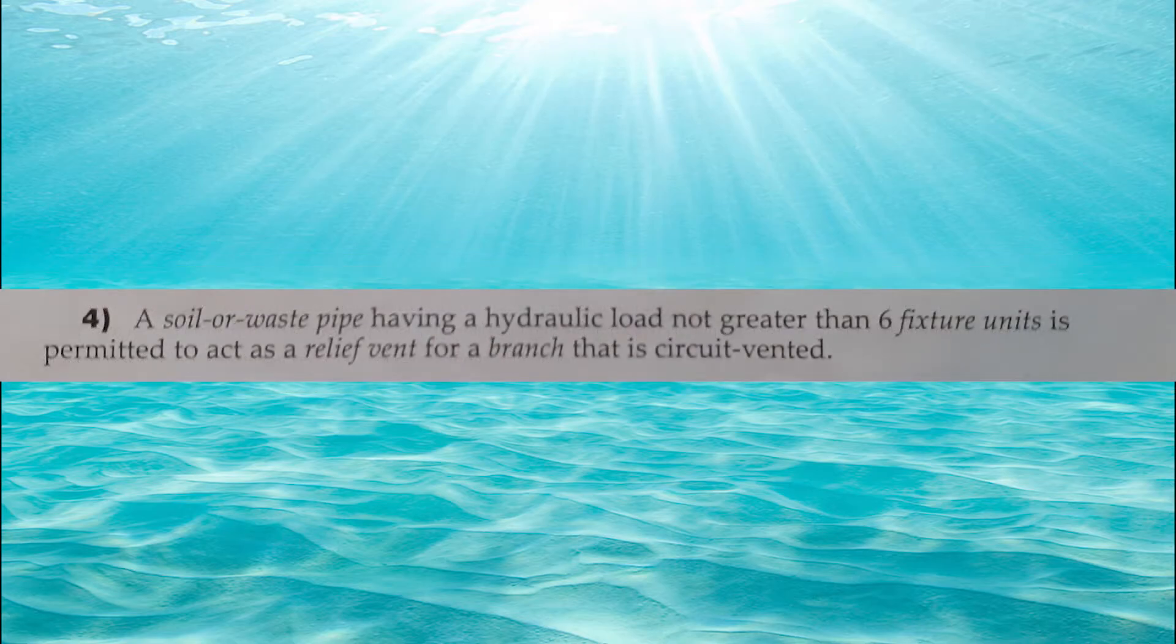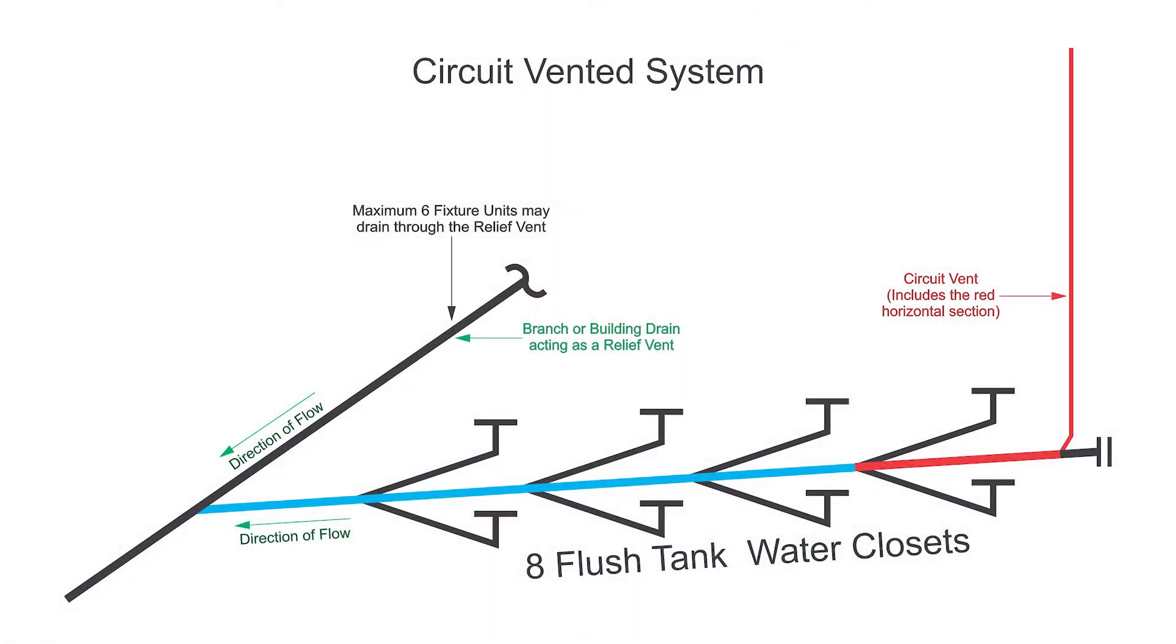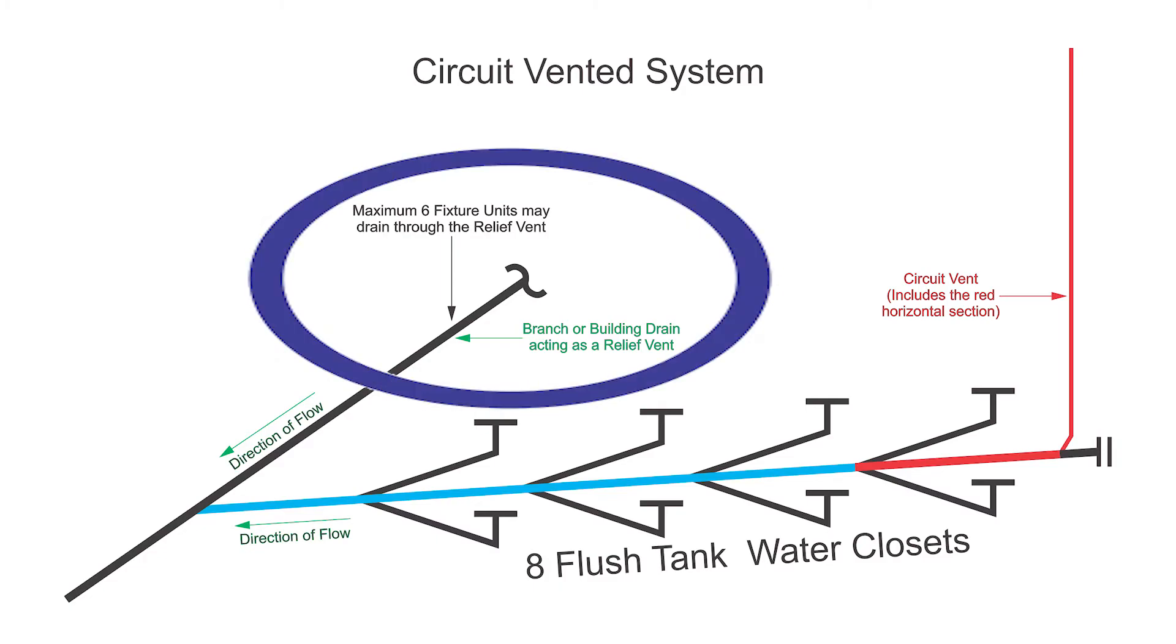Part 4 says, a soil waste pipe having a hydraulic load not greater than 6 fixture units is permitted to act as a relief vent for a branch that is circuit vented. What this is telling me is I can have any drain pipe acting as this relief vent, given there is no more than 6 fixture units draining through it.